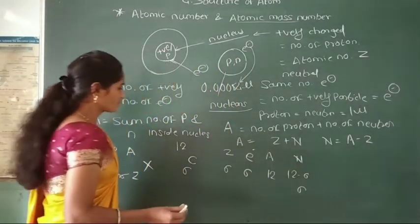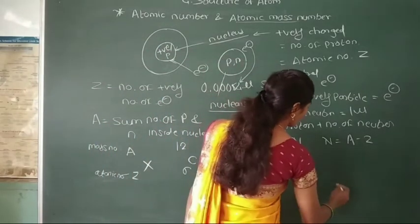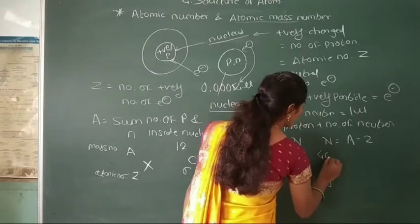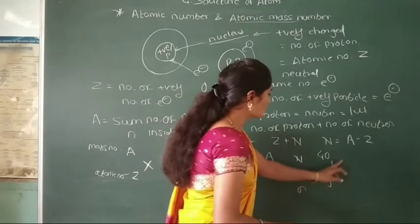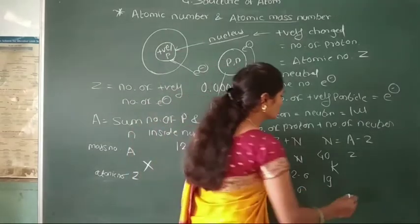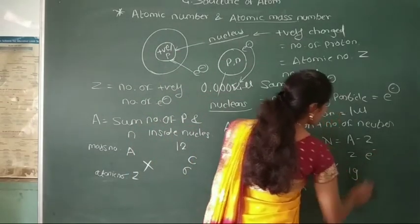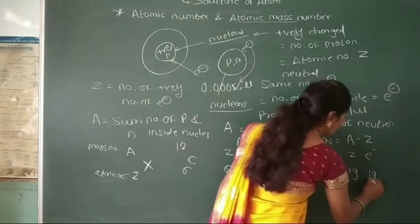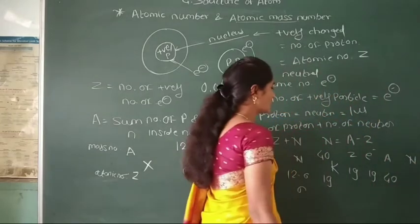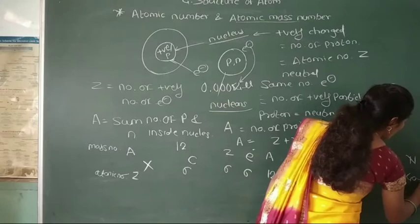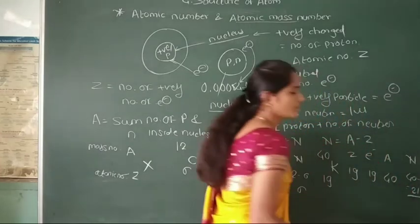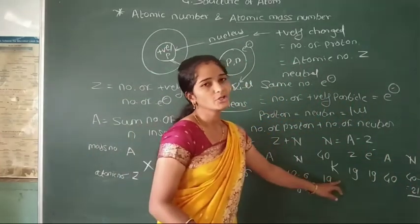Let us take another example: potassium, with atomic number 19 and mass number 40. The number of protons, that means the atomic number of potassium, is 19. The number of electrons is also 19. The number of neutrons is calculated by A minus Z = 40 minus 19 = 21. So there are 21 neutrons present in the potassium atom.